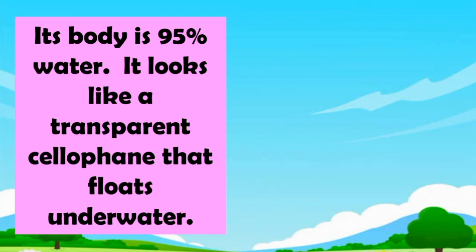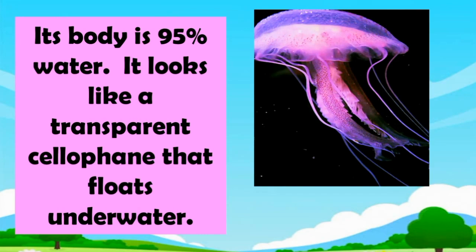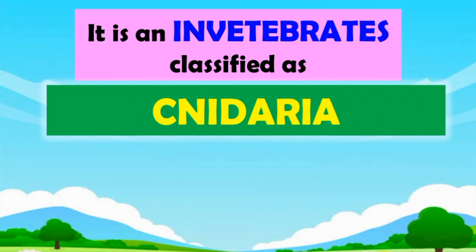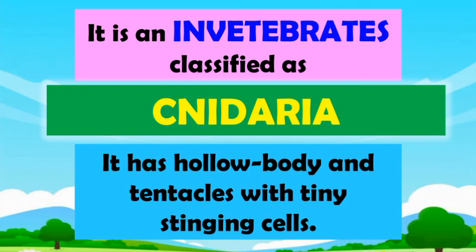Guess what? Its body is 35% water. It looks like a transparent cellophane that floats underwater. It is an invertebrate classified as cnidaria. It has a hollow body and tentacles with tiny stinging cells.